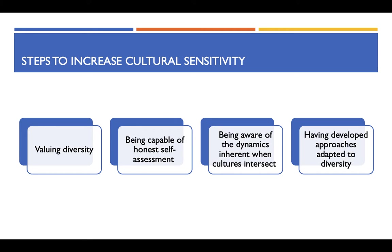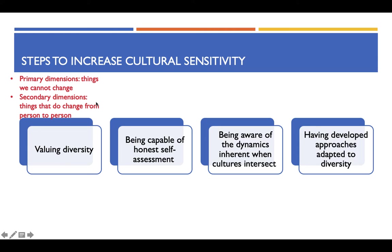There are four steps we can take to help us increase cultural sensitivity. The first one is valuing diversity. Before we value diversity, we need to know there are two major dimensions of diversity: primary dimensions, which refer to things we can't change, such as age, race, ethnicity, gender, physical quality, and sexual orientation. On the other hand, secondary dimensions refer to things that do change from person to person — including income, education, religious beliefs, military experience, geographic location, parental status, and marital status.